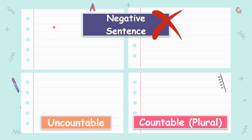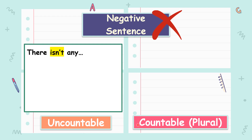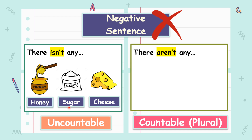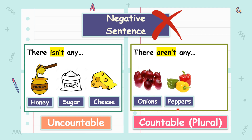Now we are going to use any to write negative sentences — for uncountable and countable. When we see uncountable, we use is not. When we see countable, we use are not. For example: there isn't any honey. There isn't any sugar. Or there isn't any cheese. There aren't any onions. There aren't any peppers. Or there aren't any carrots.